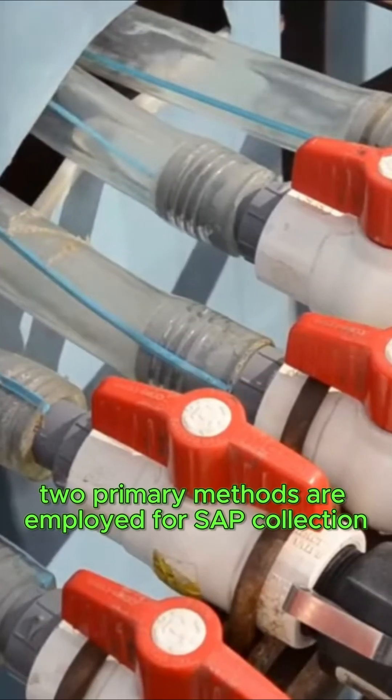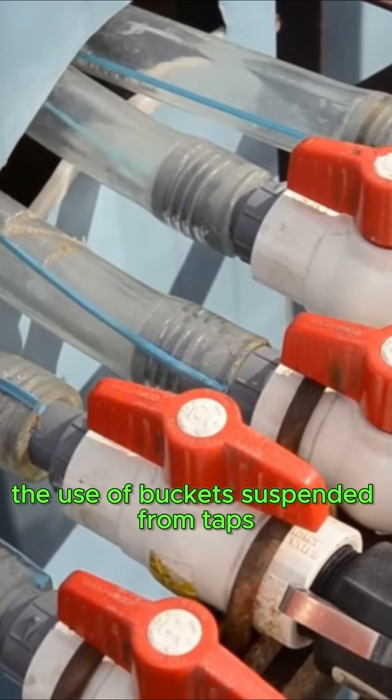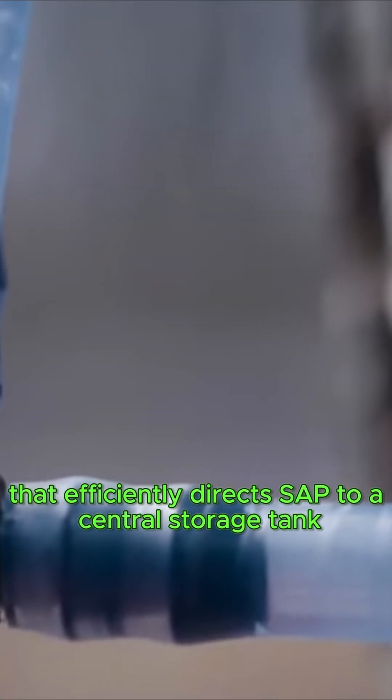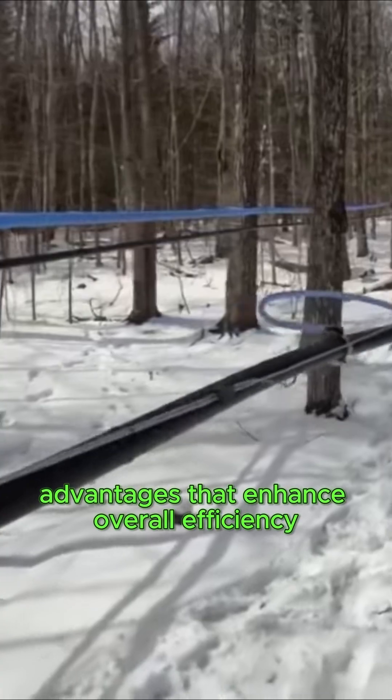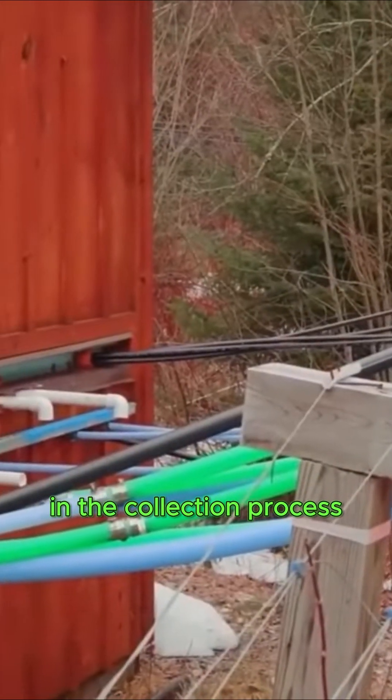Two primary methods are employed for sap collection: the use of buckets suspended from taps and a network of tubing that efficiently directs sap to a central storage tank. Each method presents unique advantages that enhance overall efficiency in the collection process.